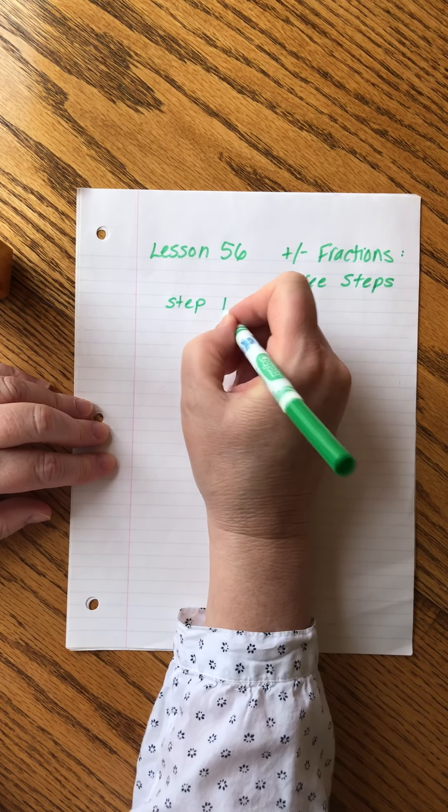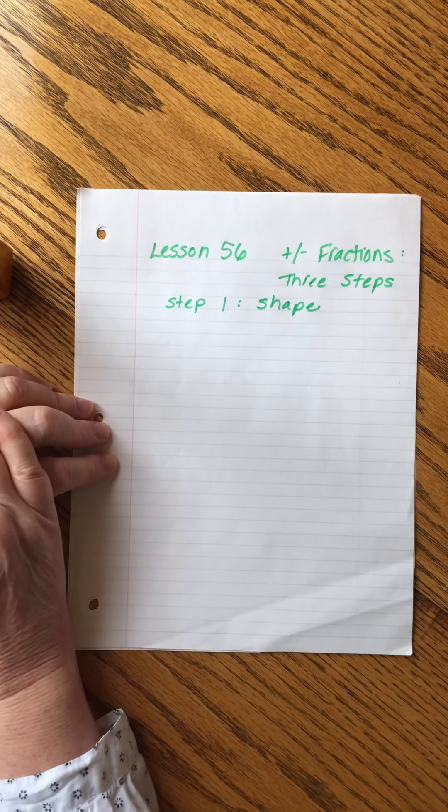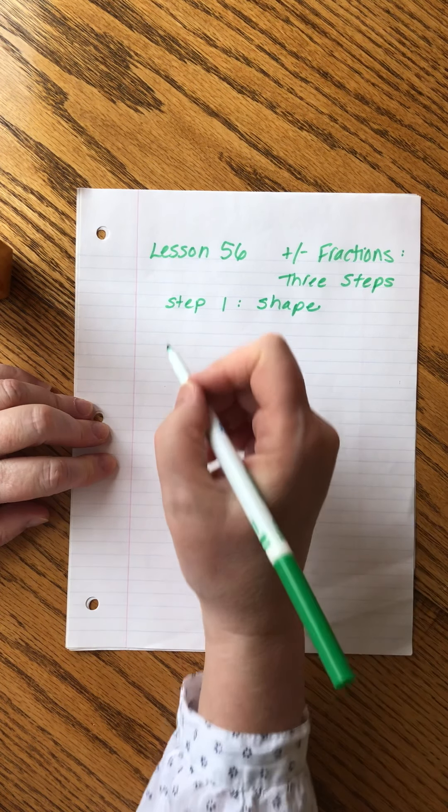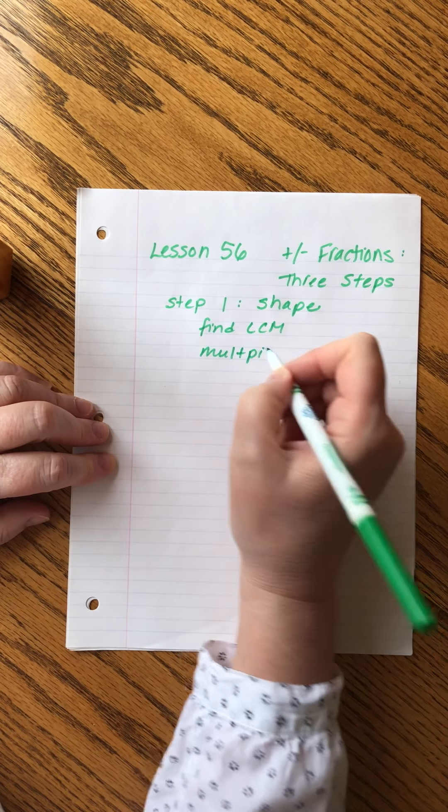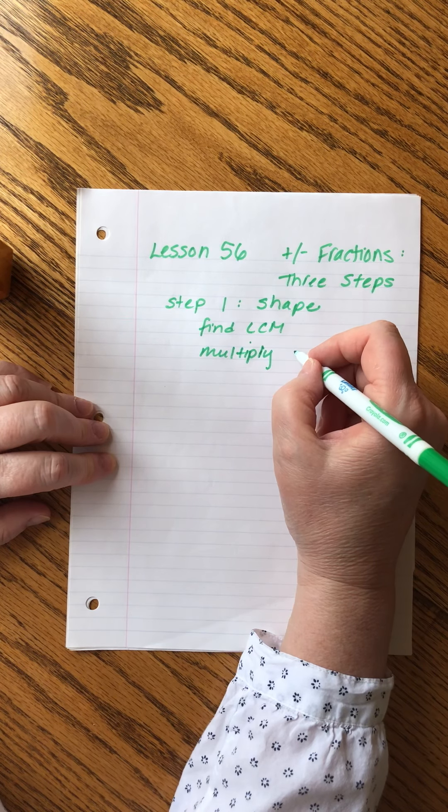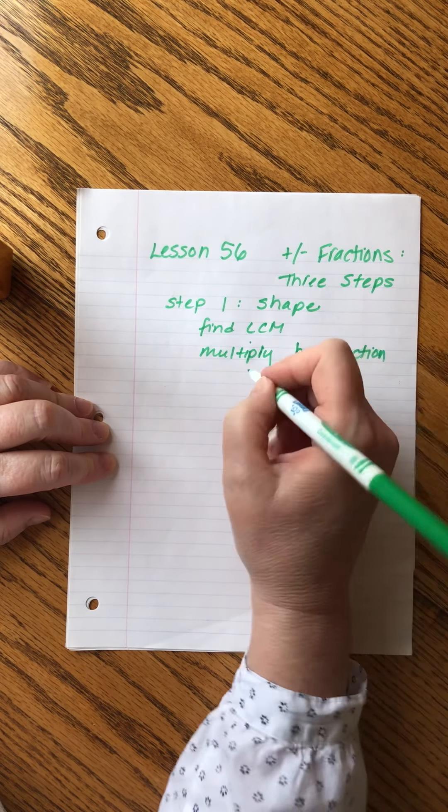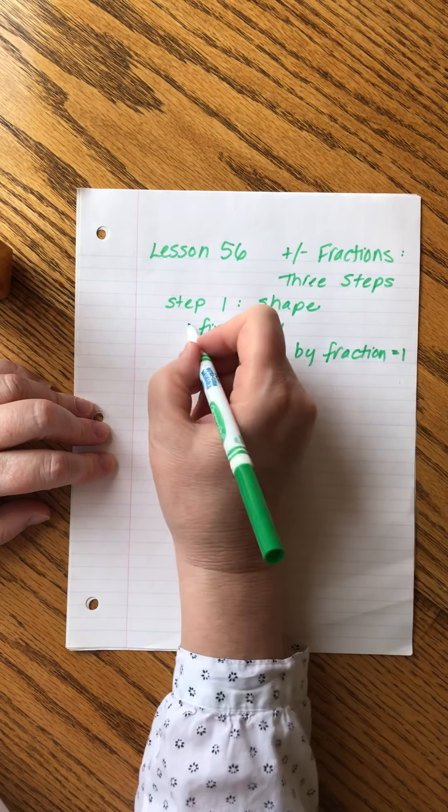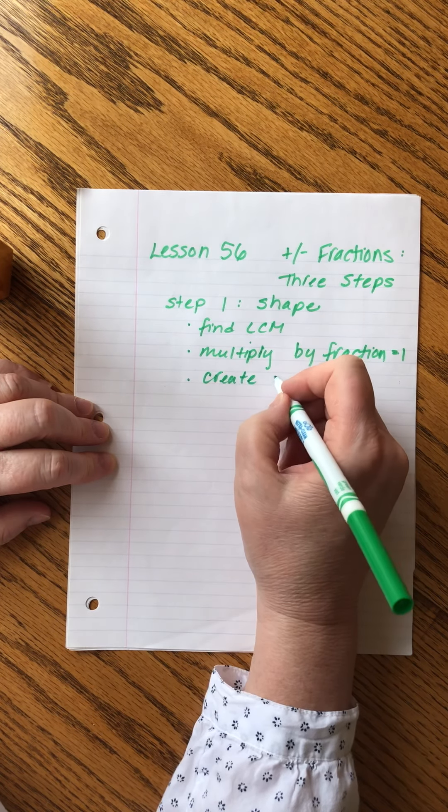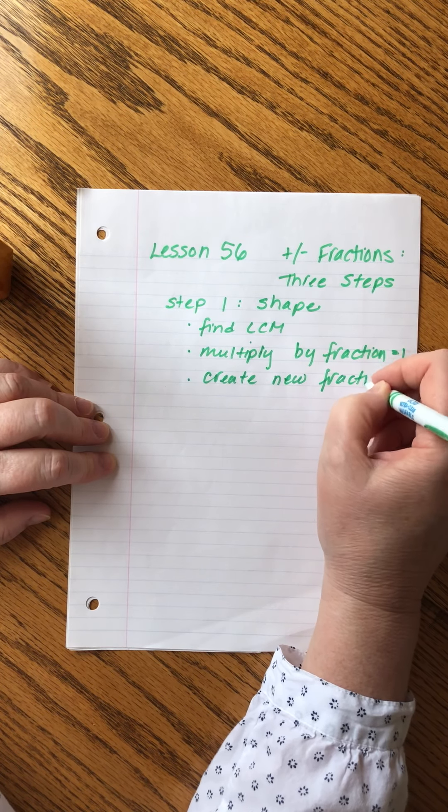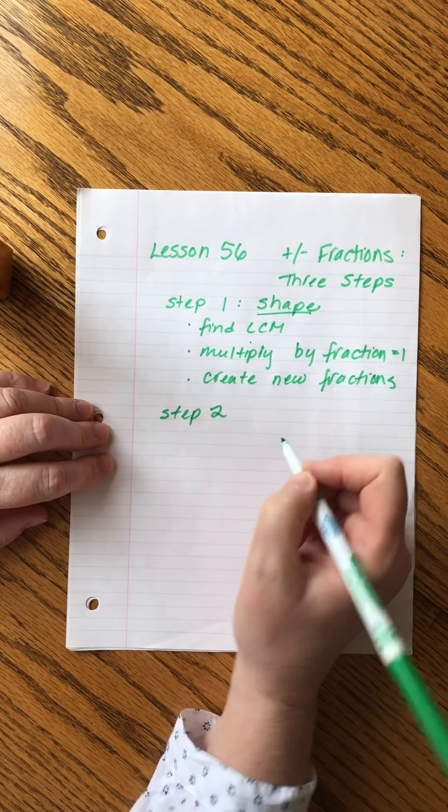In step one, we shape the fractions. We change the denominators. We find the least common multiple. We multiply by a fraction equal to one, right? I draw my little fraction equal to one, and then we create new fractions. Well, they're not new, but they're renamed. They should be equal to the old fraction. Okay, so that's called shaping.